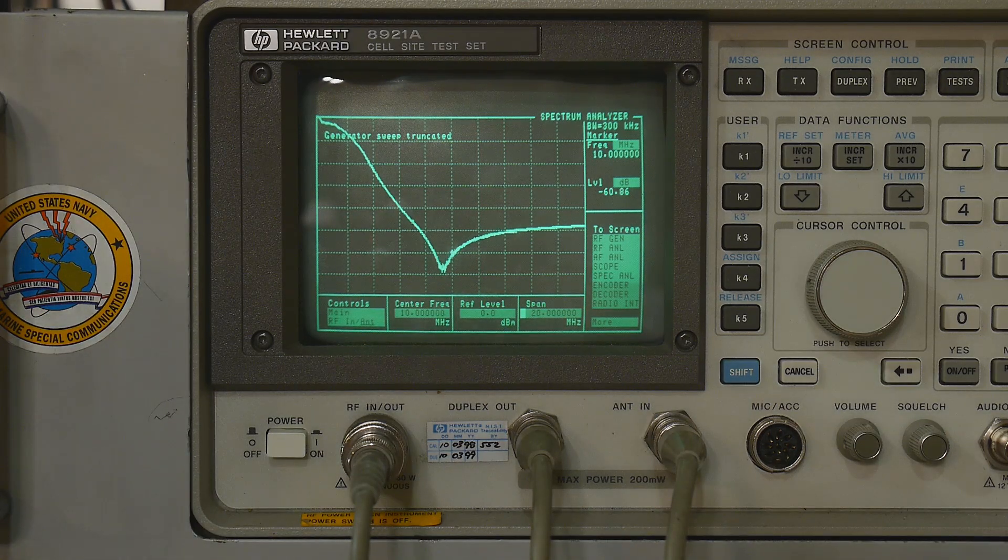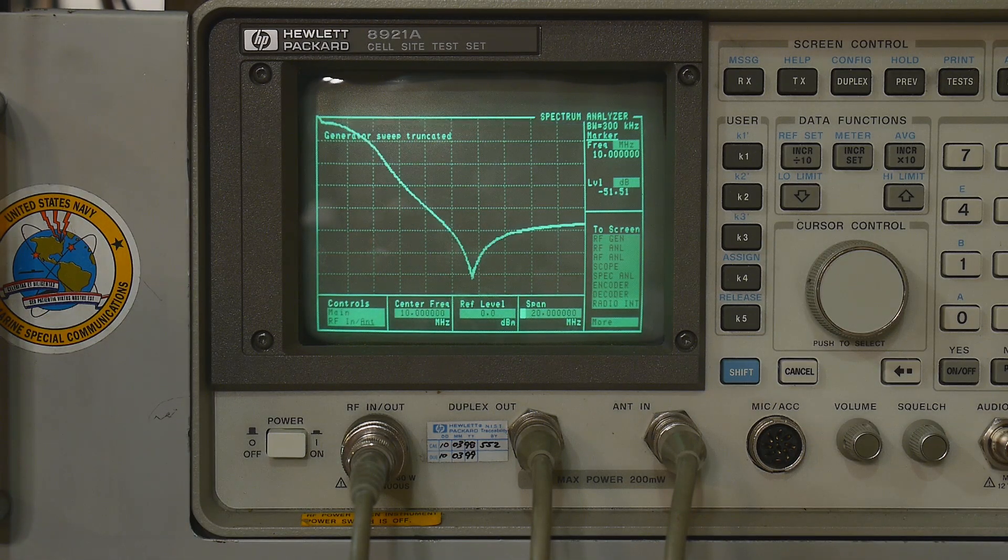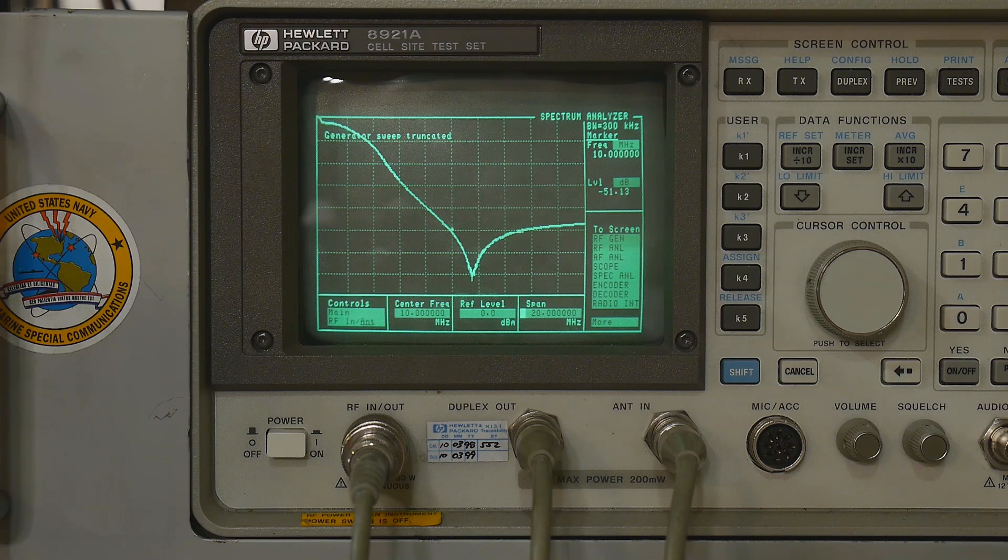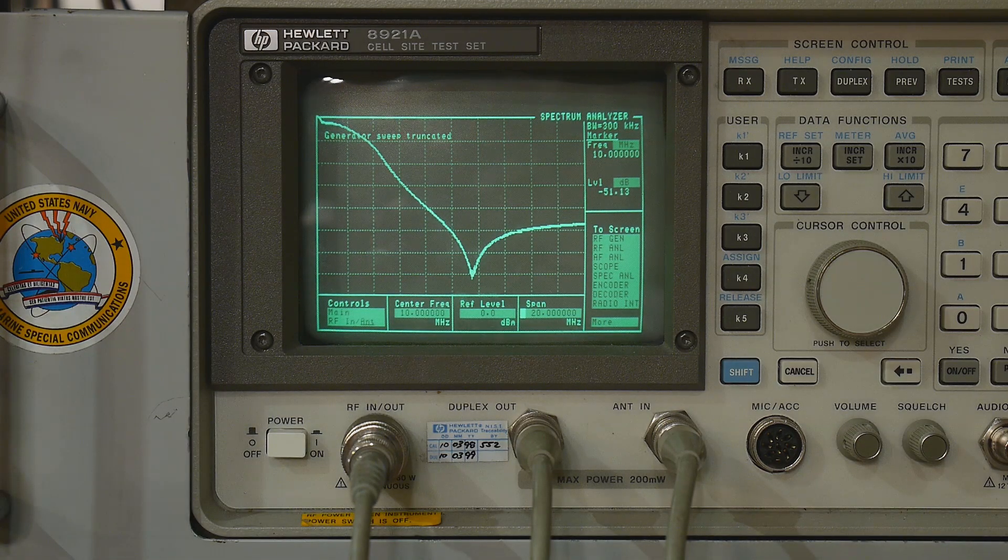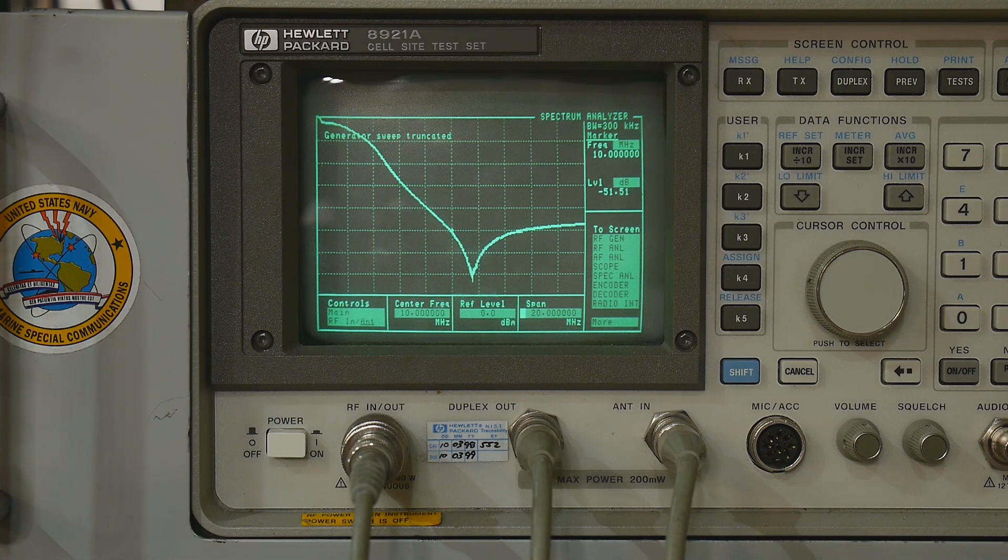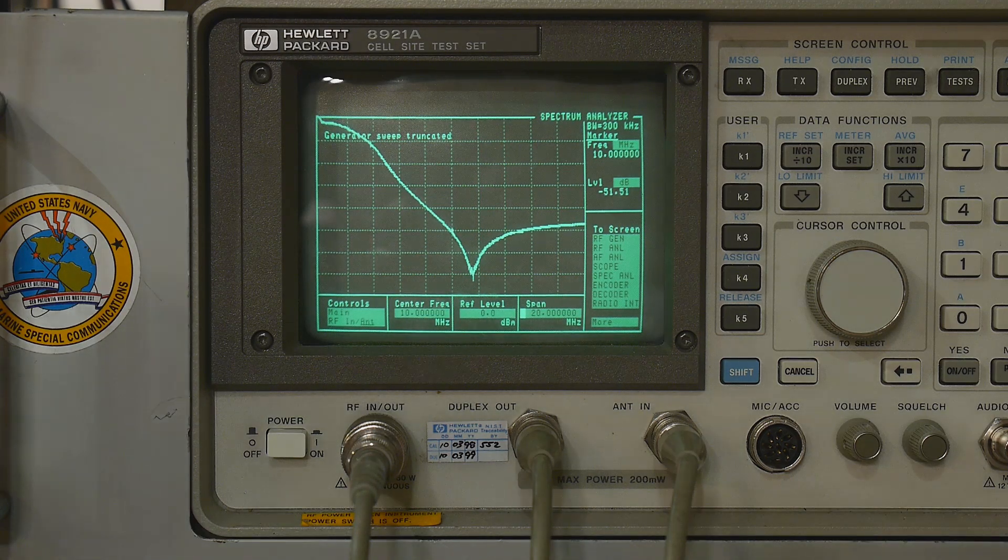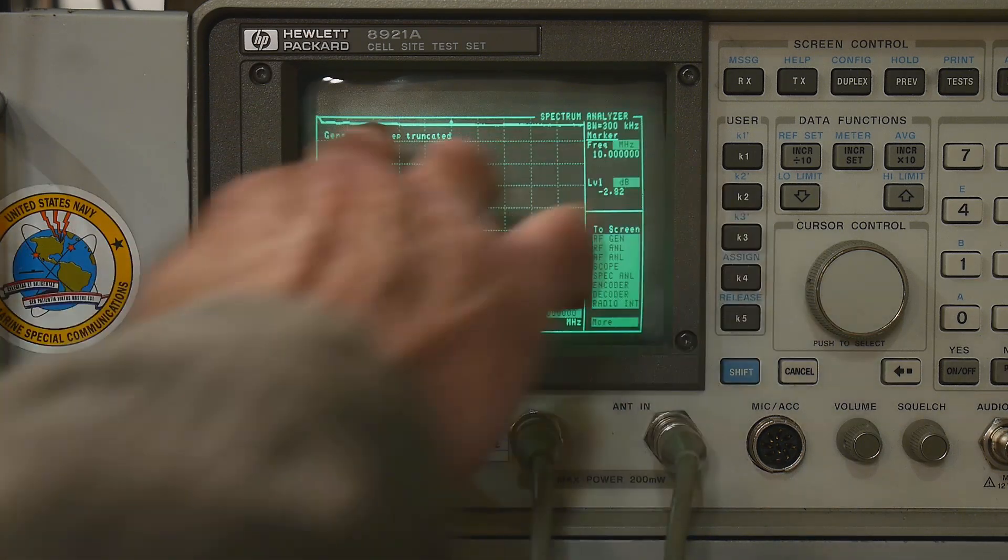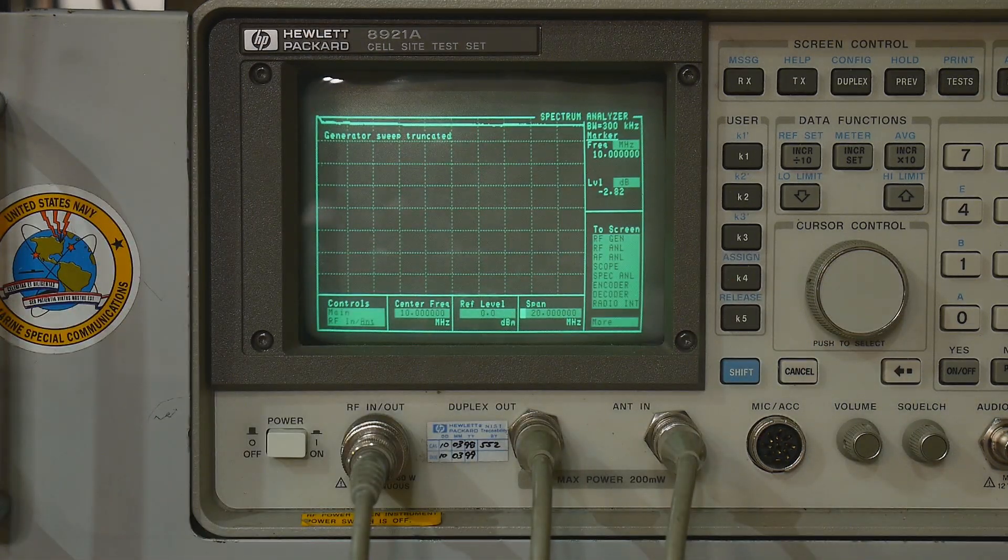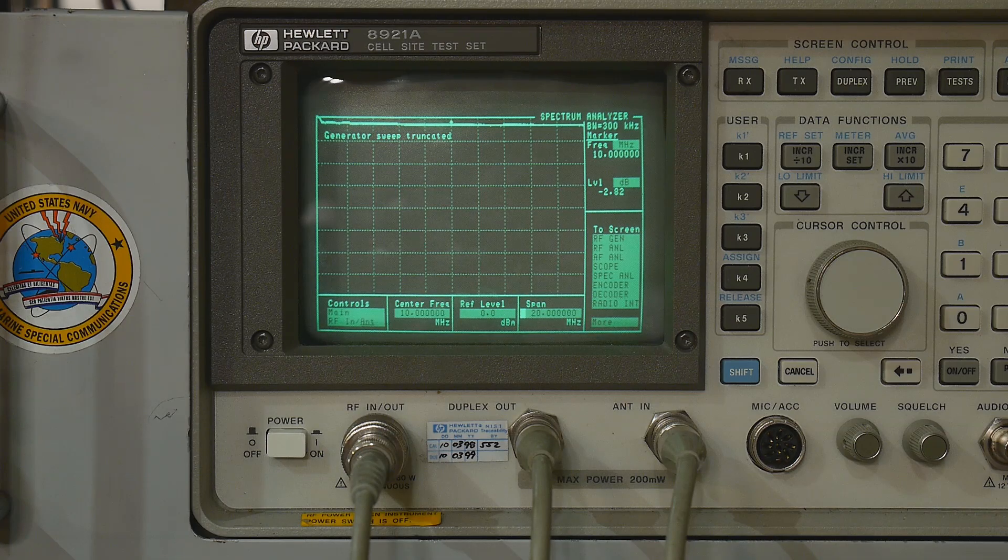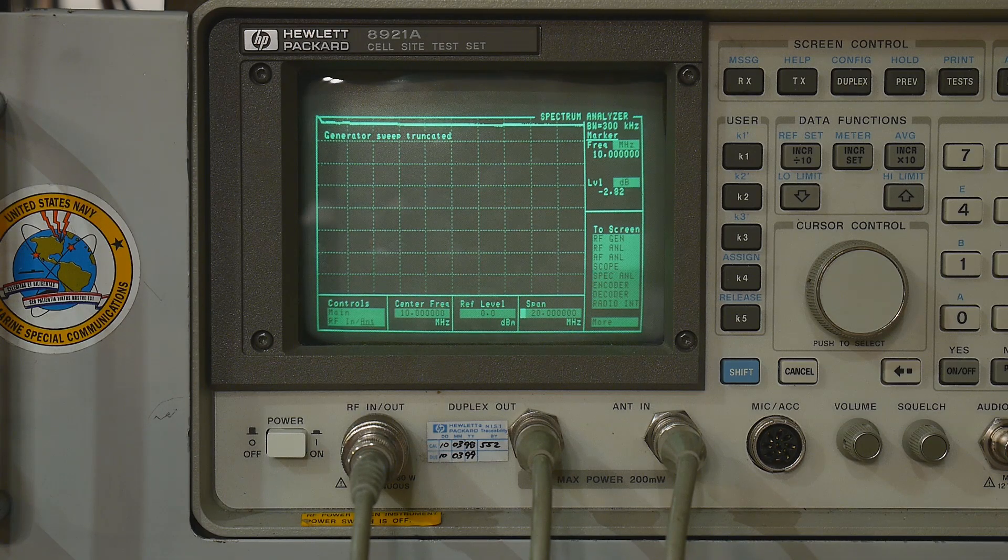And then we do 1010, and we're up here pushing on to 12, about 11 and a half MHz. And then if we go one more, it seems to be bypassing the filter. So 1011 and 1100 seem to bypass the filter.